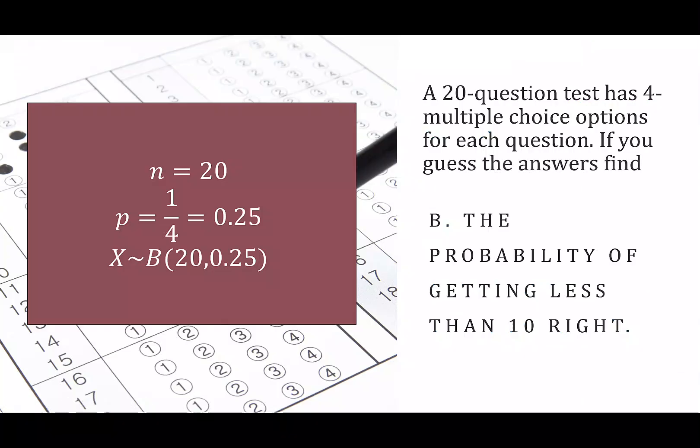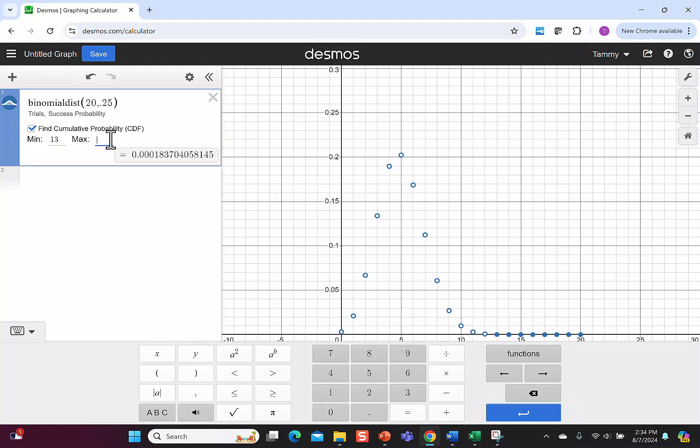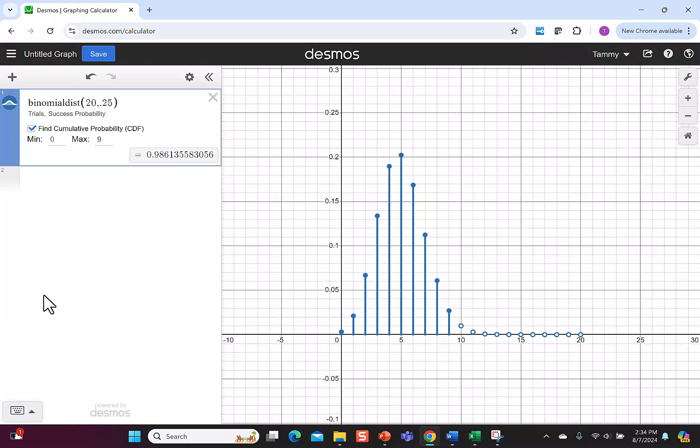The next part says let's find the probability of getting less than 10 right, so less than 10 is 9, 8, 7, 6, all the way down to 0. So we have the same distribution, same 20 trials, and 25% chance of getting it right. We already have it checked as cumulative. We're going to make the max this time 9. We're going to make the minimum 0. That way we have from 0 to 9 correct.